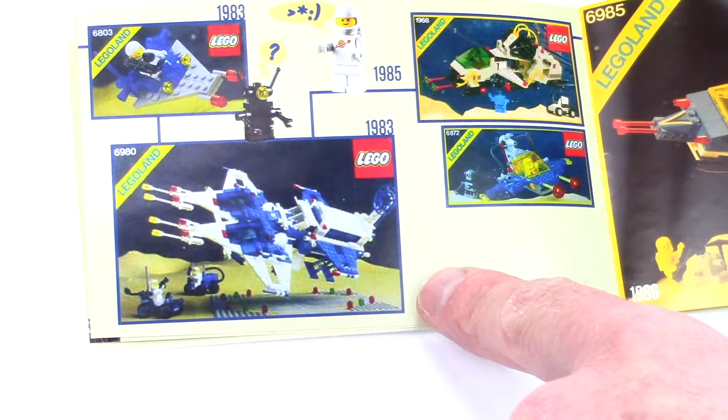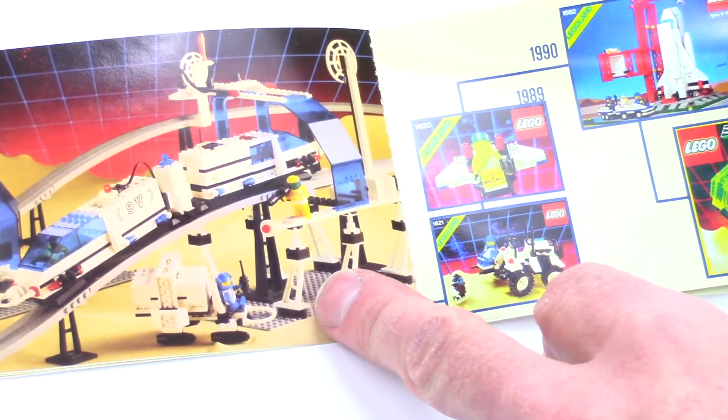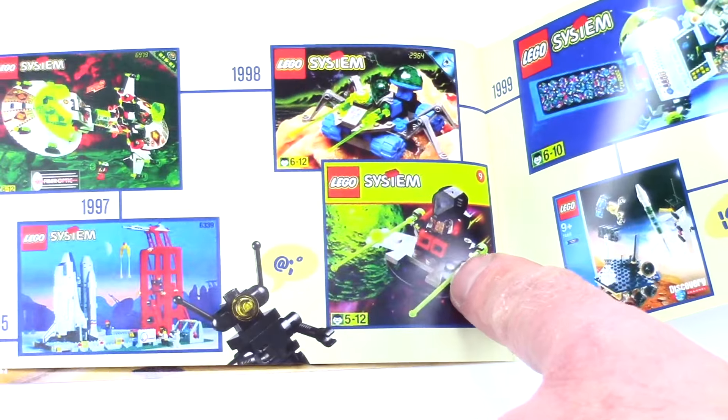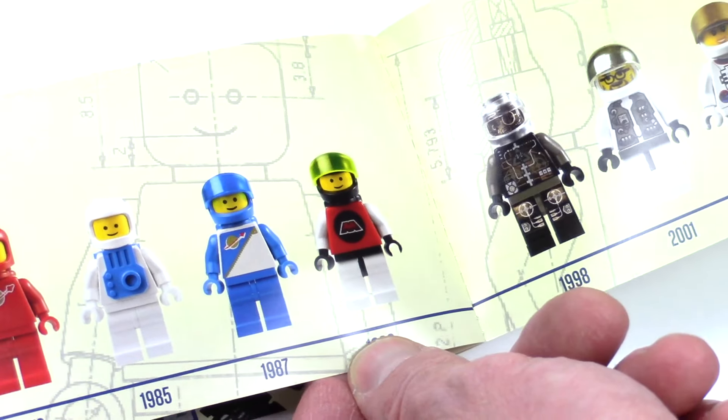There's the Galaxy Commander, my favorite set. Cosmic Fleet Voyager here. The monorail. So this is really cool. I appreciated this little kind of trip down memory lane here and I really appreciated that they included this thing.